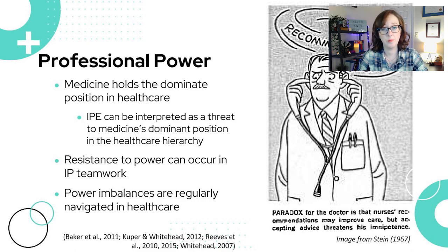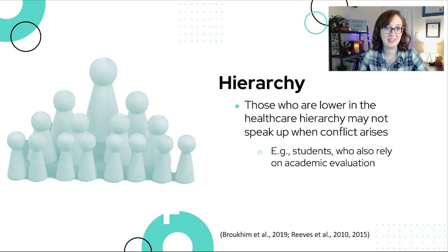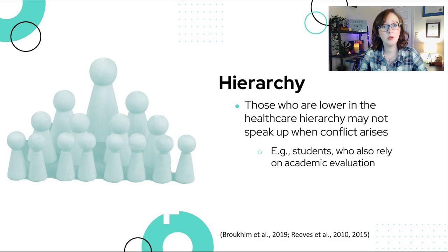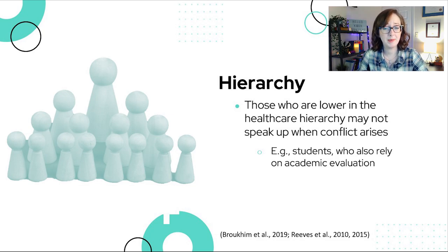Power imbalances are something many of us navigate regularly in healthcare. A good example would be a physician's decision to discharge a patient being in tension with the nurse's perspective that the patient is not suitable for discharge. Hierarchy — or perceived hierarchy — can be a substantial factor influencing interprofessional work. Those who are lower in hierarchy may not speak up when conflict arises. For example, students may find it difficult to speak up to someone of higher status — faculty members, staff, senior trainees, administrators. Students are also highly dependent on their academic evaluations, which can act as a barrier to speaking up. Another example is nurses potentially being uncomfortable questioning a medical decision made by a physician.